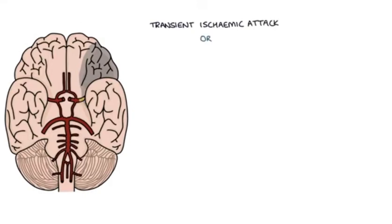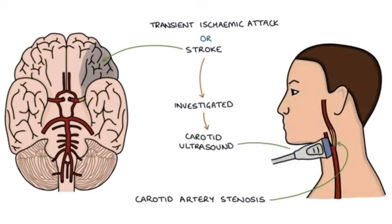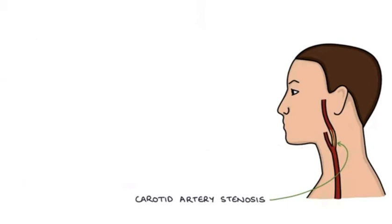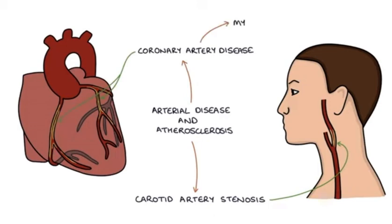Patients who have a transient ischemic attack or a stroke are investigated for carotid artery stenosis, usually with a carotid ultrasound scan. Patients with carotid artery stenosis are very likely to have arterial disease and atherosclerosis elsewhere, and are at high risk of coronary artery disease and myocardial infarction.